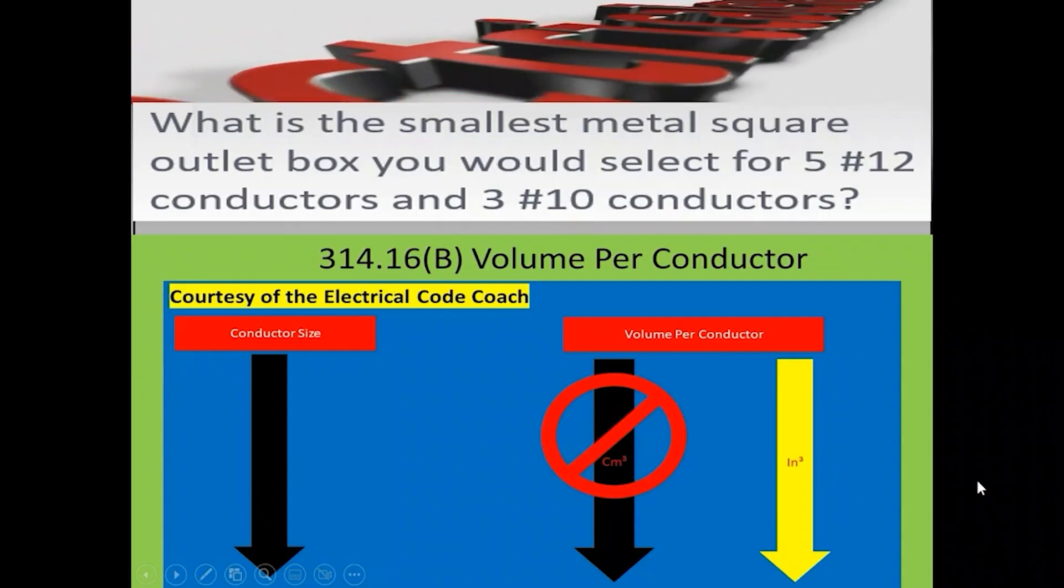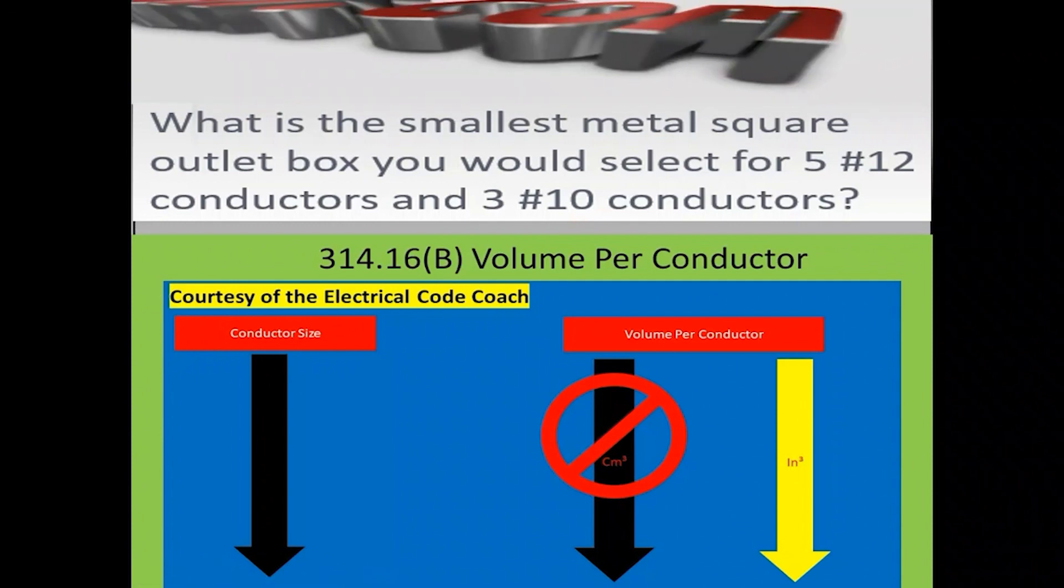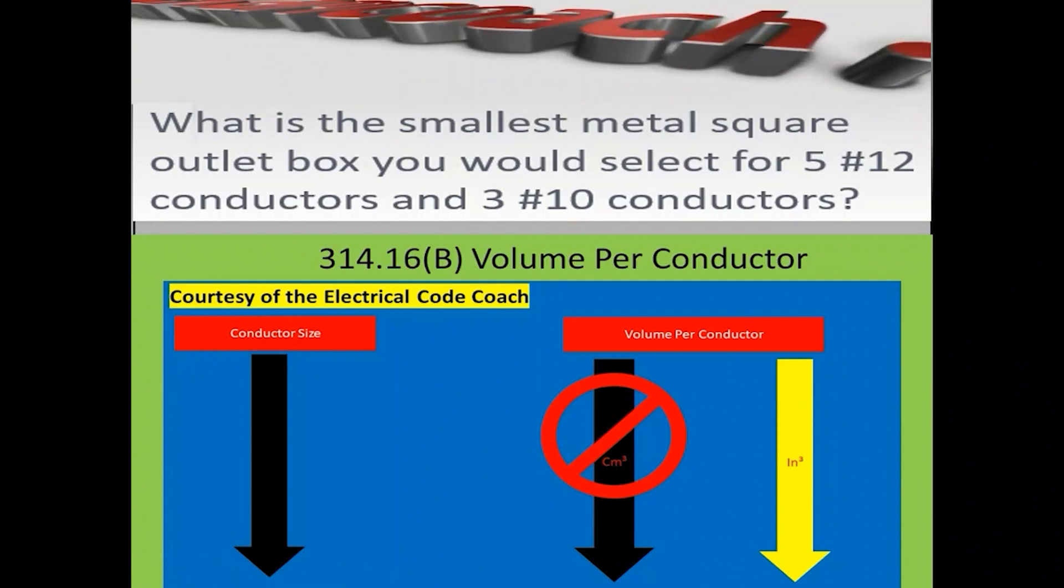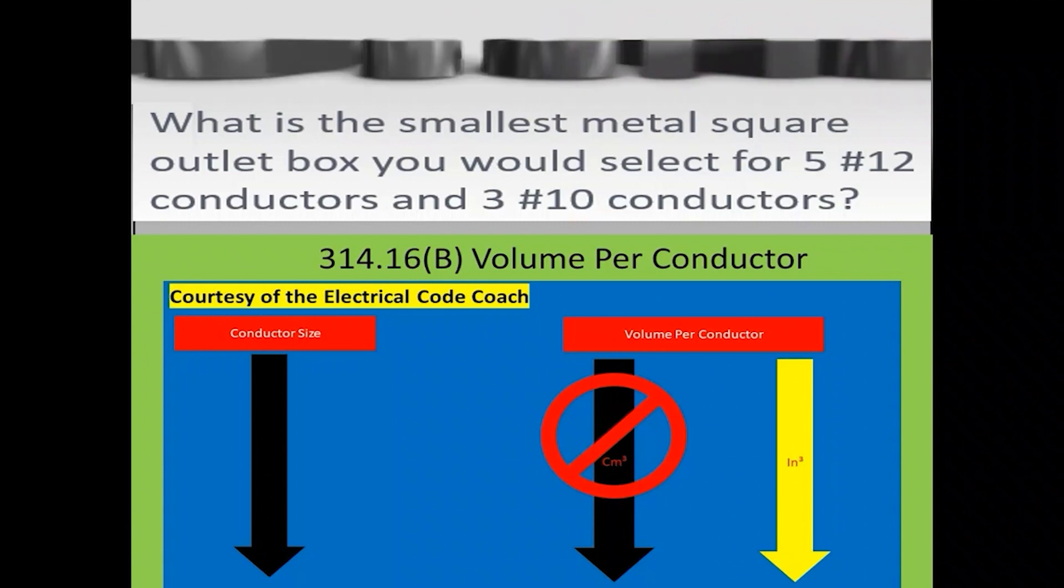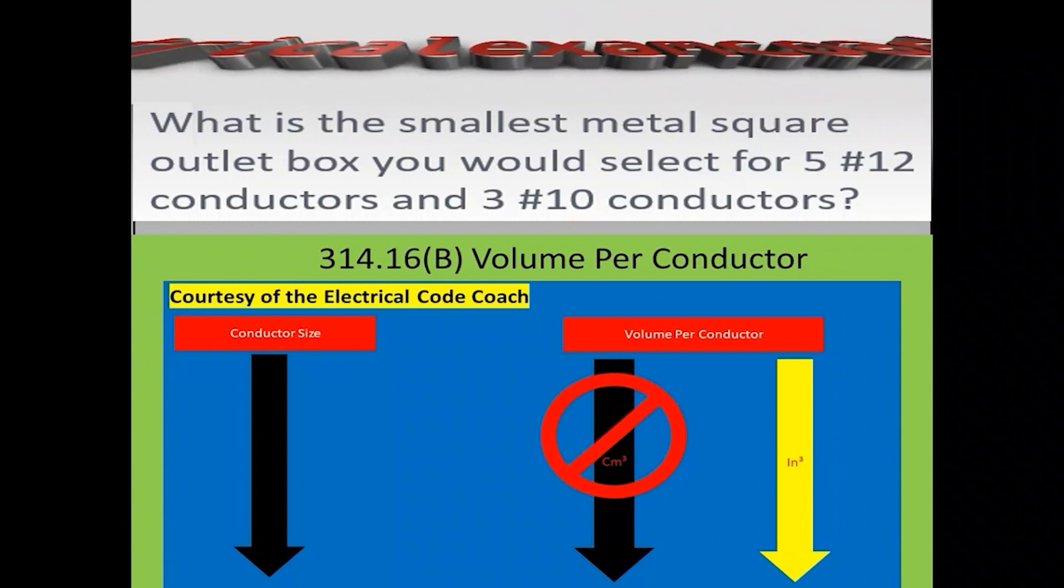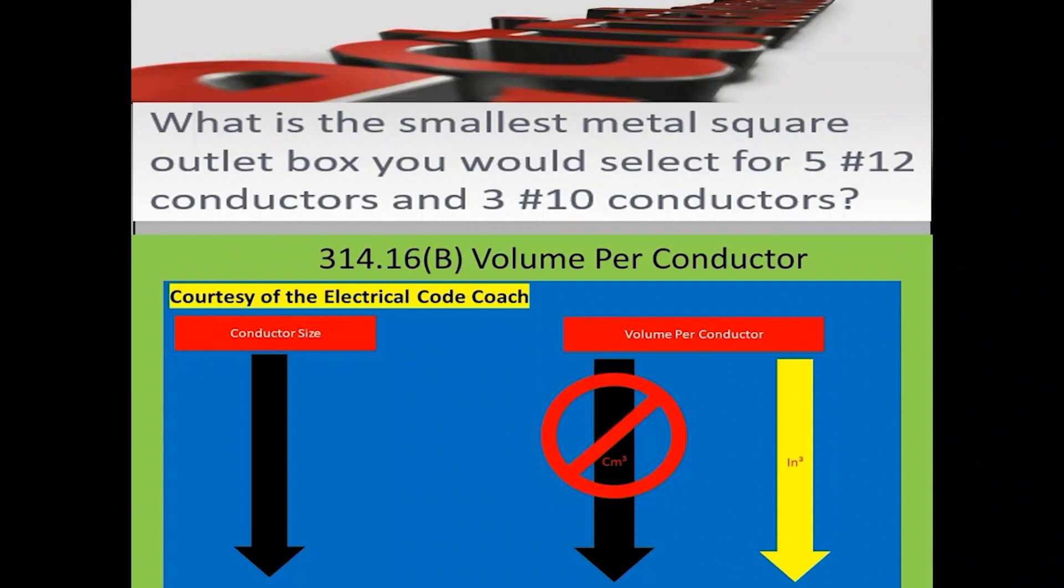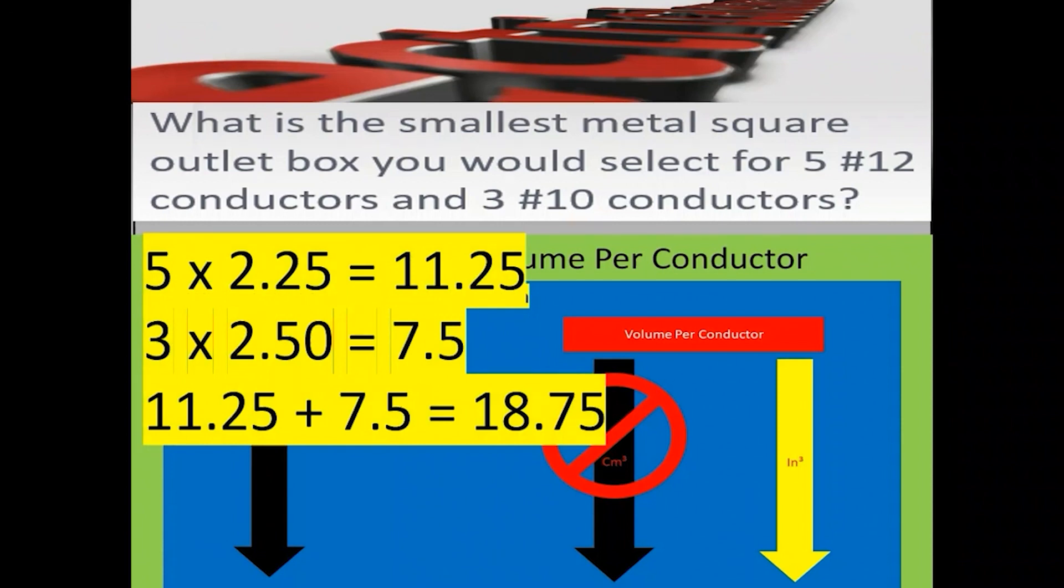For this one, we're going to head to table 314.16b first and we're going to find the cubic inch volume of each conductor. We start on the left-hand side and find a number 12 and come over to the cubic inch per conductor column and we're going to find that it's 2.25. We have five of those conductors, so we bear that math out and we get 11.25. We do the same process for the 10 gauge wires and end up with 7.5. We add those two together and that equals 18.75 cubic inches that we have that we need to fill a box with.